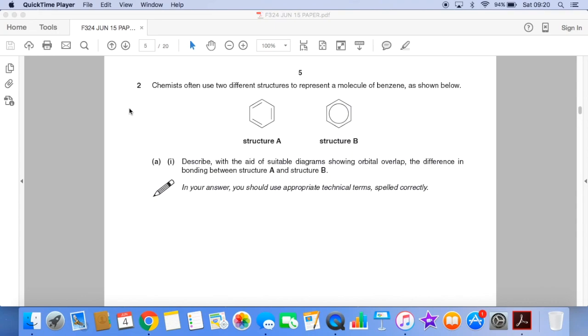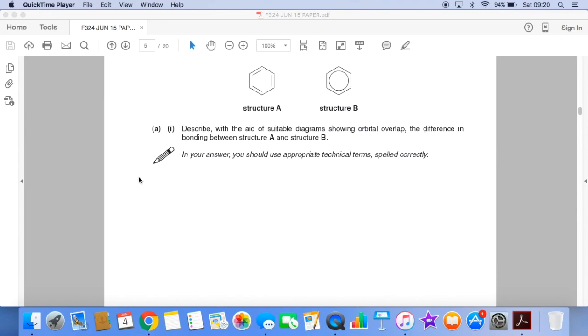You've got to draw two diagrams to show the difference in terms of orbital overlap between those two structures. And then in the explanation you have to give, you must spell the appropriate technical terms correctly.